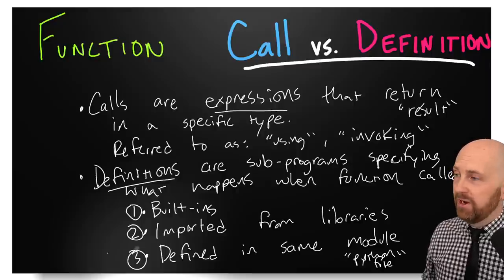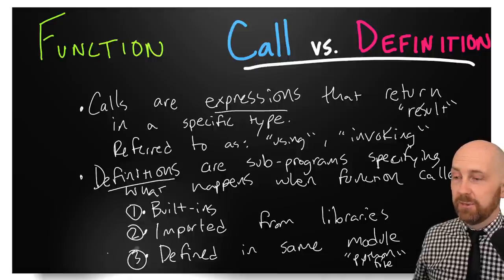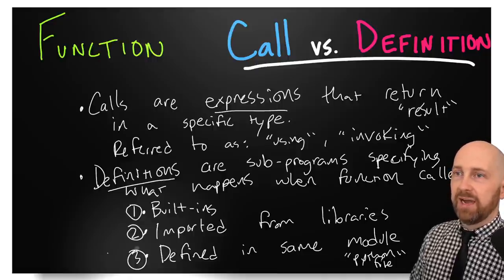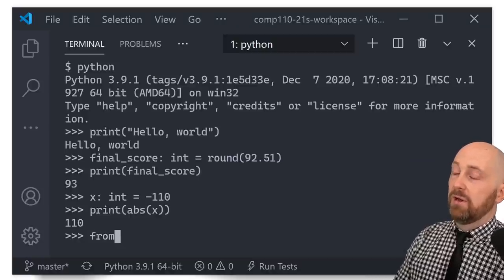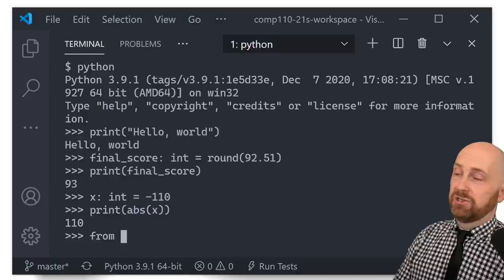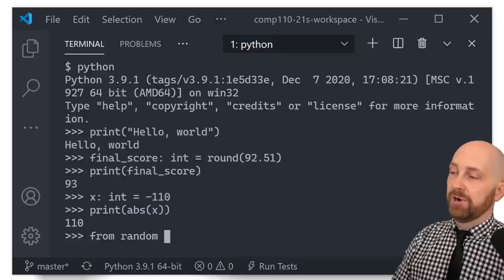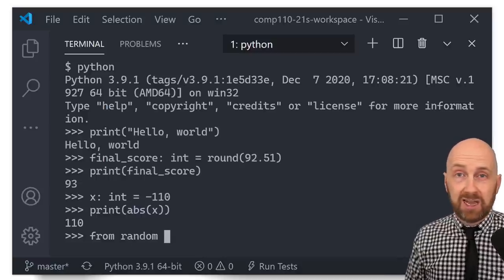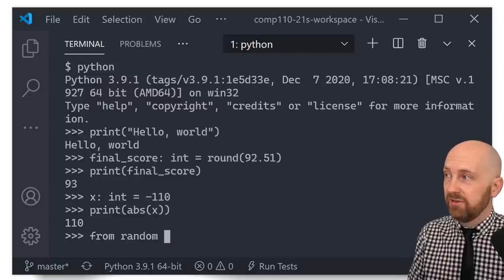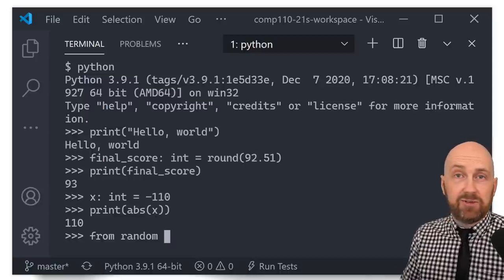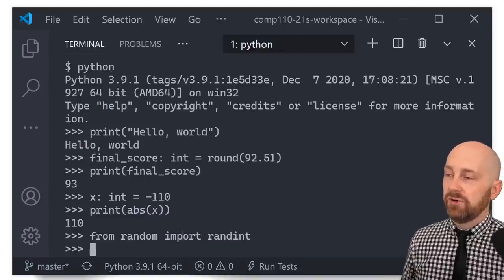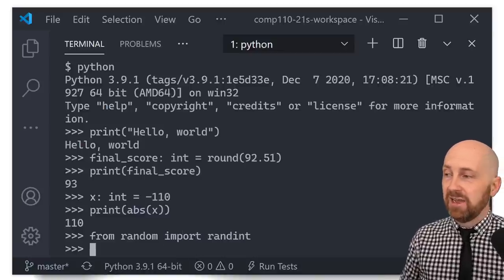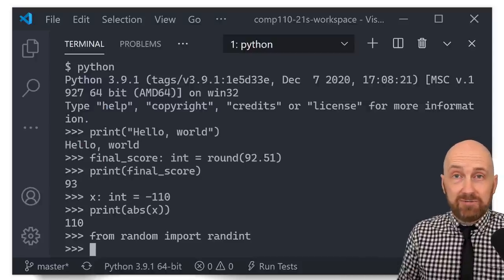All right. So let's take a look at importing a function from a library. And I'm once again, going to go back to my VS code example. And we're going to import the random integer function from the random library. So random is a standard library in Python. It comes with every Python distribution and it has some functions defined in it. One of which is named randint. So we're going to import the randint function and now we can use that function definition.